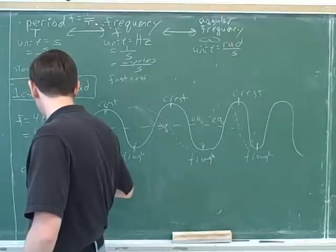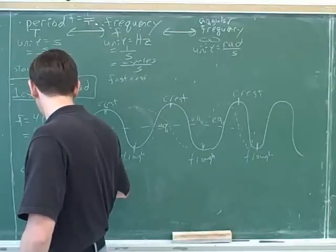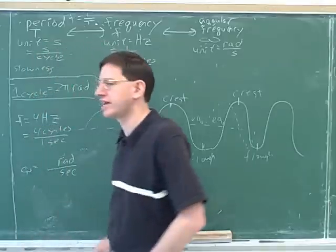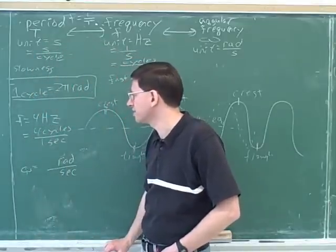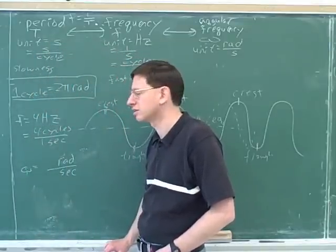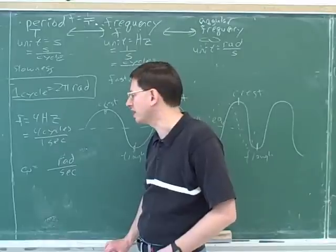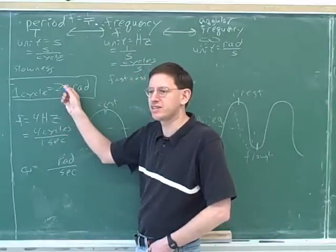Well, then how many radians are they going through per second? If they're going through four cycles per second, how many radians are they going through per second? Eight pi. Eight pi, yeah. Each cycle is two pi radians.